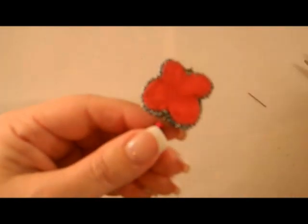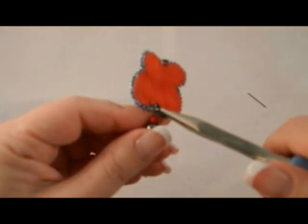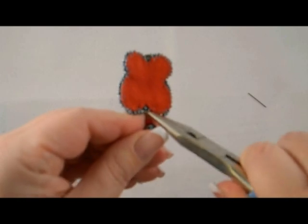You can then use your pliers to open the loop, thread the loop onto the bottom jump ring of the earring and close the loop.